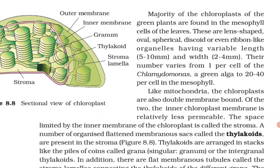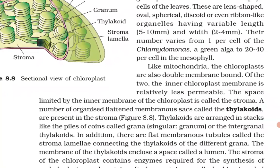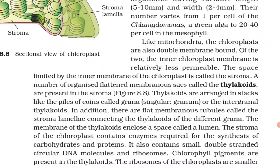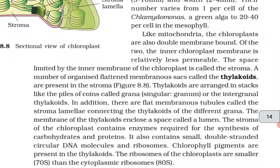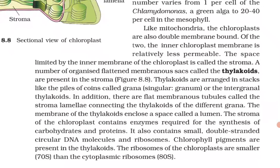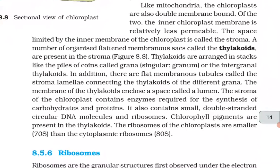The majority of chloroplasts of green plants are found in the mesophyll cells of the leaves. These are lens-shaped, oval, spherical, discoid, or even ribbon-like organelles having variable length (5–10 mm) and width (2–4 mm). Their number varies from one per cell in Chlamydomonas (a green alga) to 20–40 per cell in mesophyll. Like mitochondria, chloroplasts are also double membrane-bound. The inner chloroplast membrane is relatively less permeable. The space limited by the inner membrane is called the stroma. Organized flattened membranous sacs called thylakoids are present in the stroma, arranged in stacks like piles of coins called grana, or intergranal thylakoids. Flat membranous tubules called stroma lamella connect thylakoids of different grana.